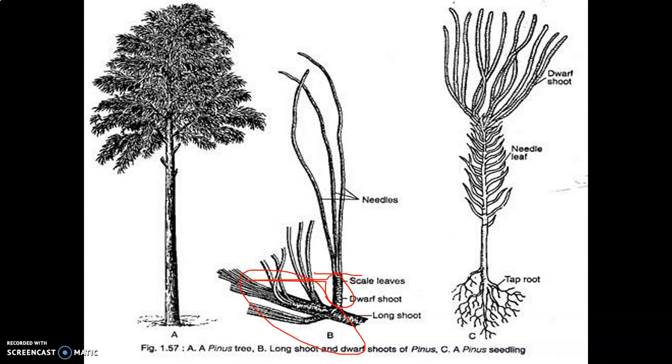This is the germinating Pinus seedling. A taproot system is present in Pinus. This shows the needle leaves and dwarf shoot.